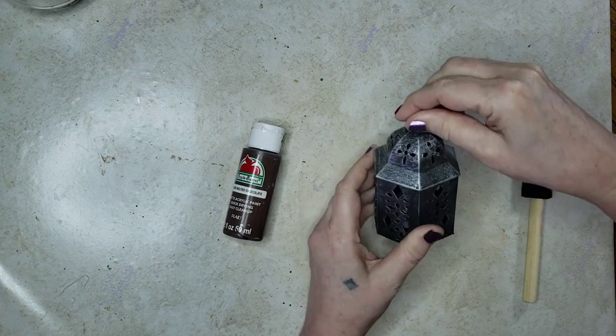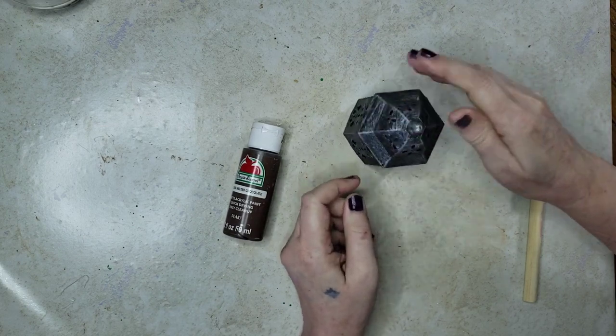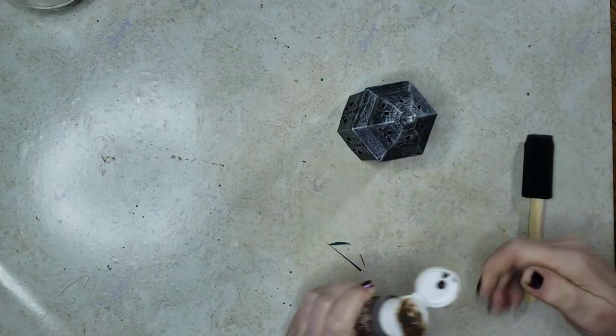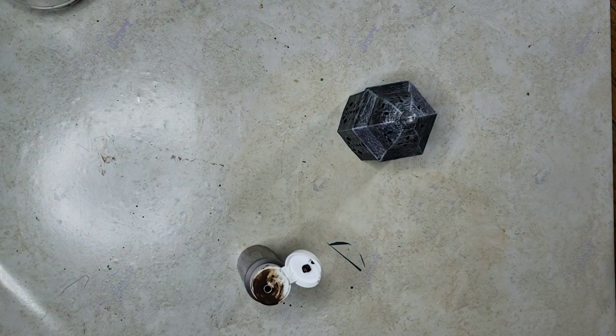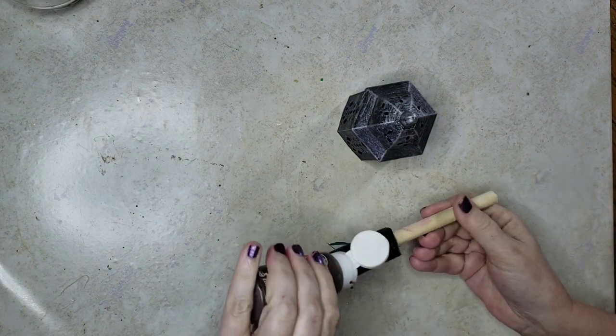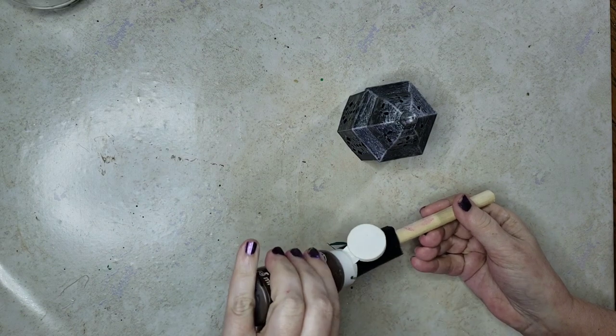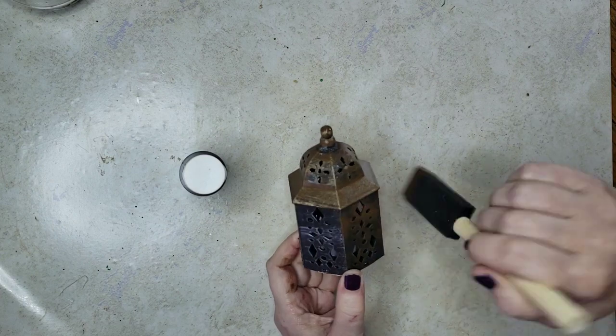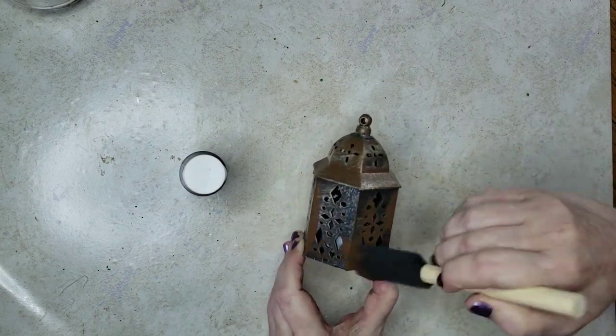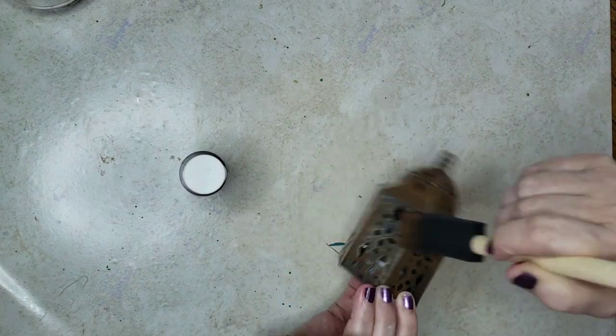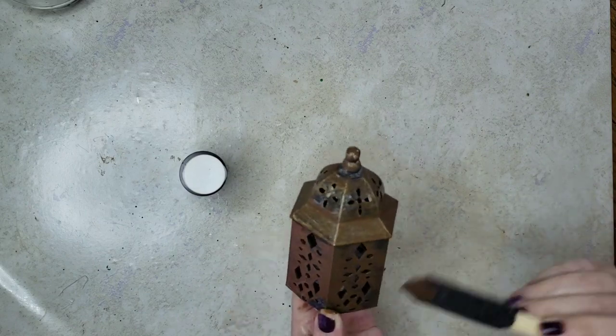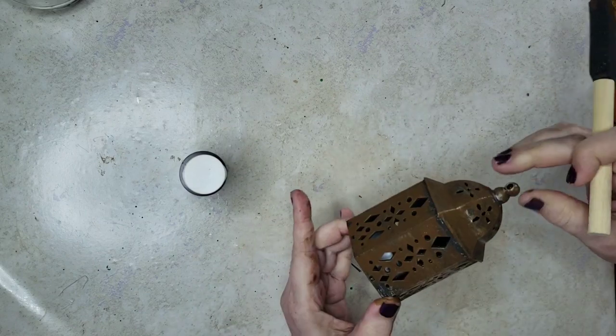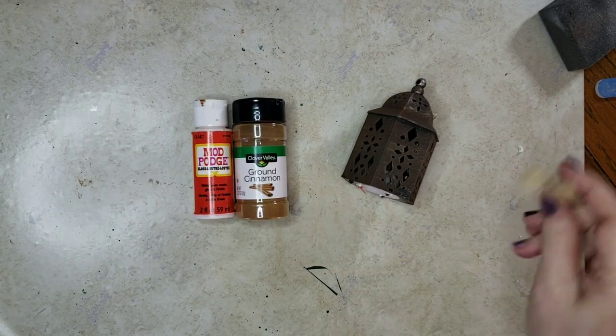And then I'm going to go in with chocolate brown paint from Apple Barrel and a sponge brush and just kind of do a dry brushing on the lantern. I don't mind if some of that silver or black shows through, just getting a 90% coverage I'd say. Once that dried, I came in with some Mod Podge.